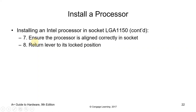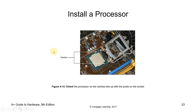Ensure the processor is aligned correctly in the socket — there is an orientation. Align the processor markings with that of the socket, then return the lever to its lock position. There are notches that guide the installation of the processor, ensuring it cannot be attached in the wrong direction.